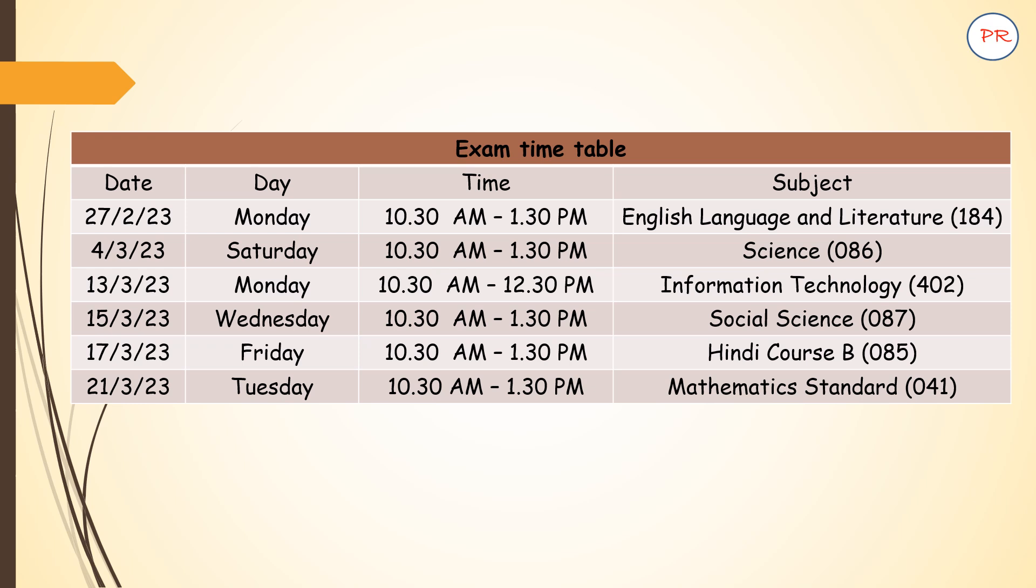Now let us see a very important thing, that is exam timetable. This will be helpful to you to understand how to prepare all the subjects in between your exams. You can see the first paper will be on Monday, that is 27th - it will be English language and literature. Obviously, if you are following this combination, then only it is applicable. Then Saturday, 4th March, you will be having science. Then on Monday, you will be having information technology. 15th March, Wednesday, you will be having social science. 17th March, Friday, you will be having Hindi course B or Hindi course A. And Tuesday, that is 21st of March, you will be having mathematics standard on Tuesday. That means your exam will start on 27th of February and it will end on 21st of March. Nearly for one month it is going to take place.